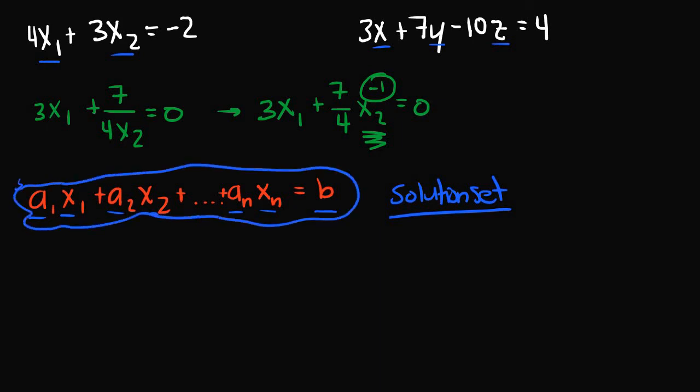We would need to find values for x₁, x₂, x₃, all the way up to xₙ, so that the left-hand side is equal to the right-hand side.